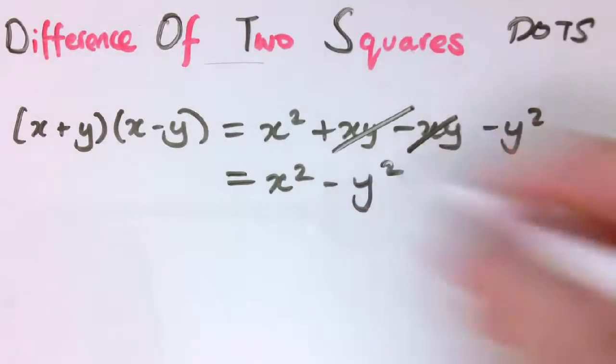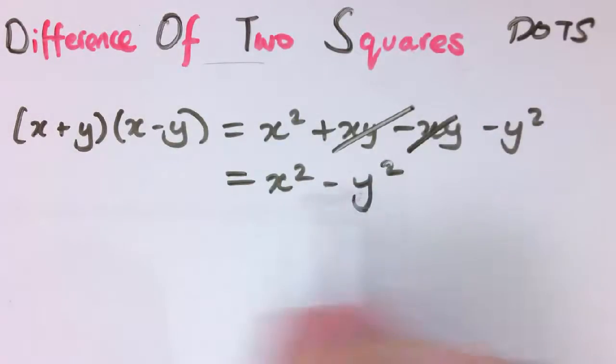This is why it's called the difference of two squares because these two things are squares, so x squared and y squared, and difference is a word that means subtraction. So this is literally the difference of two squares. And if we've got a difference of two squares like this, we can factorize it in this form. And that turns out to be incredibly useful.